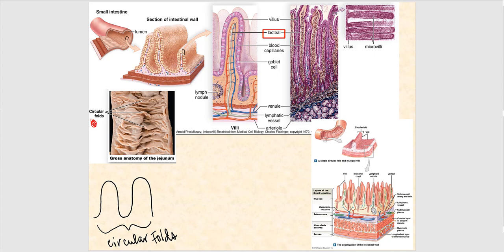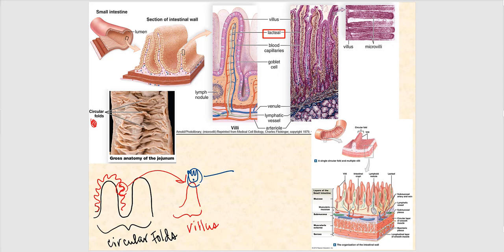Taking one of those additional folds and expanding it, we get a structure called a villus. If we look at the surface of the villus, what we find are brush border cells — also called absorptive cells — lining the surface of that villus.